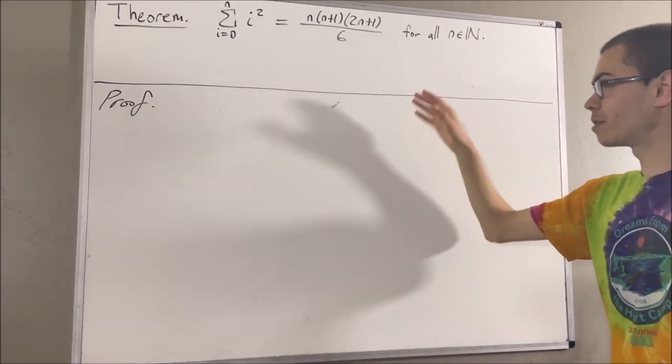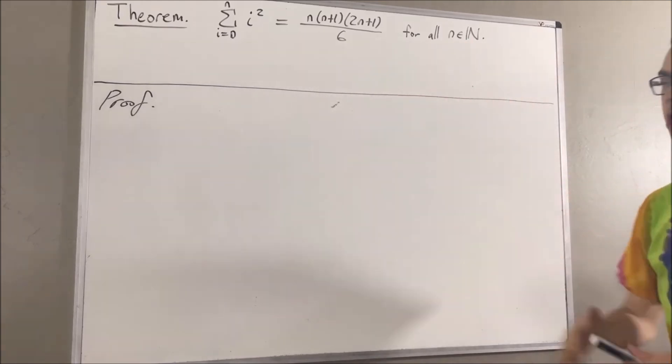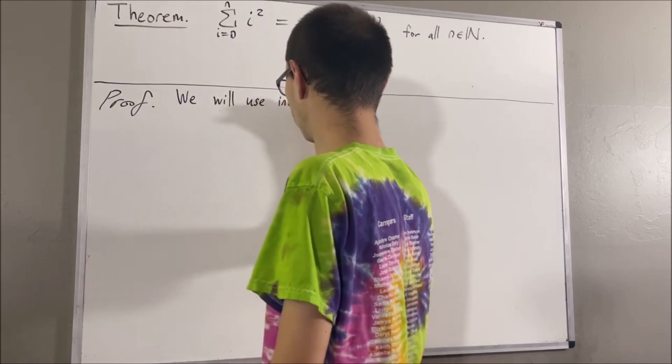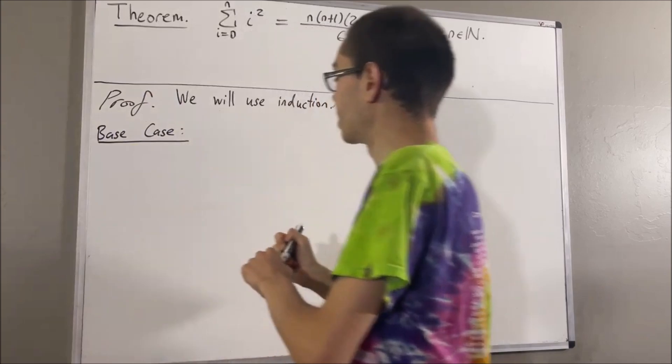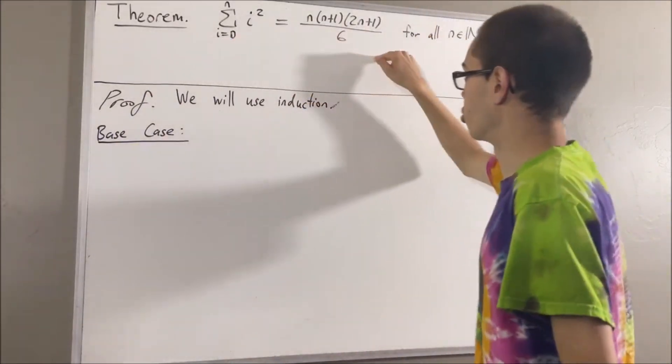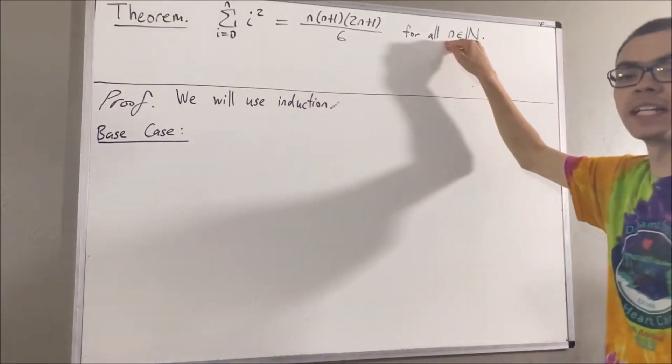Now since we're trying to prove a statement about every natural number, let's use induction. So let's start with the base case. Now in the base case, we're trying to prove that this is true in the case where n is equal to zero.